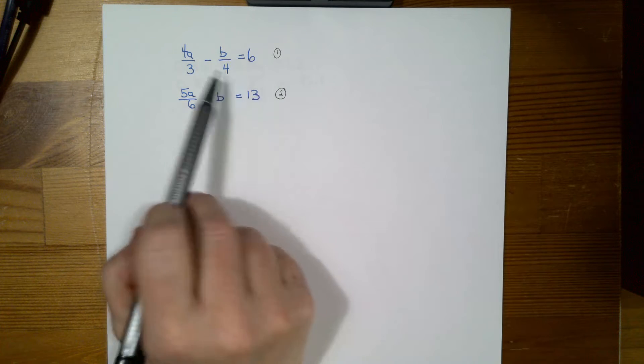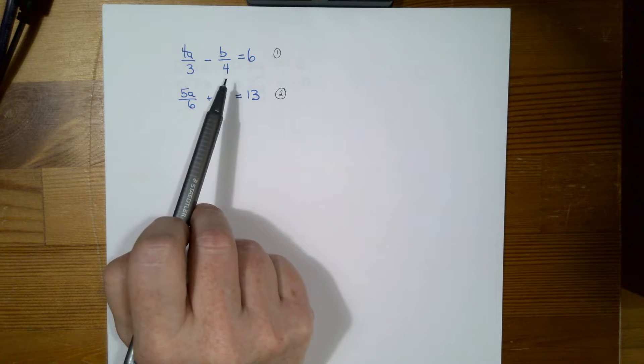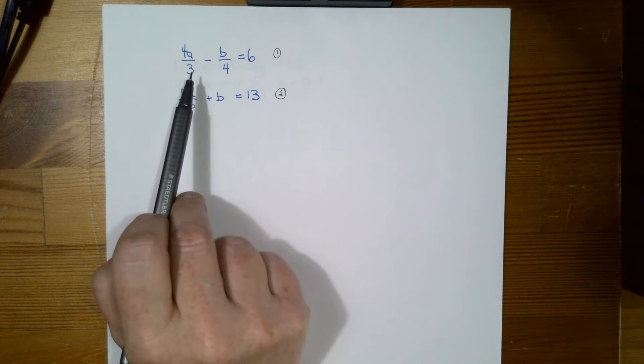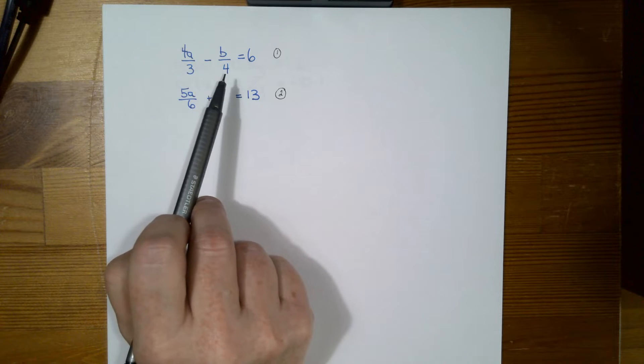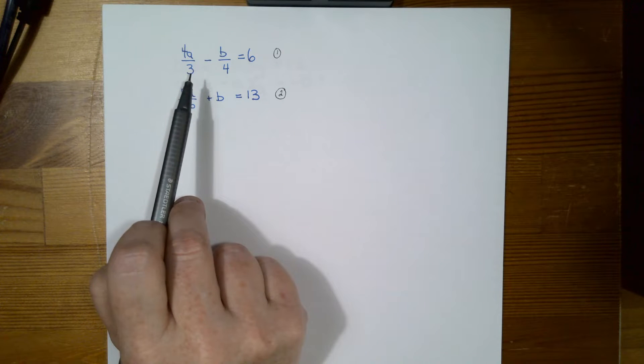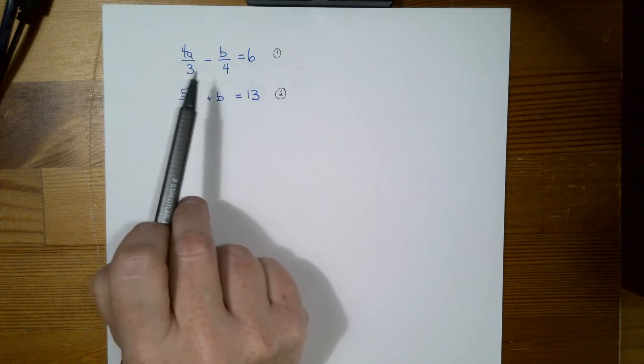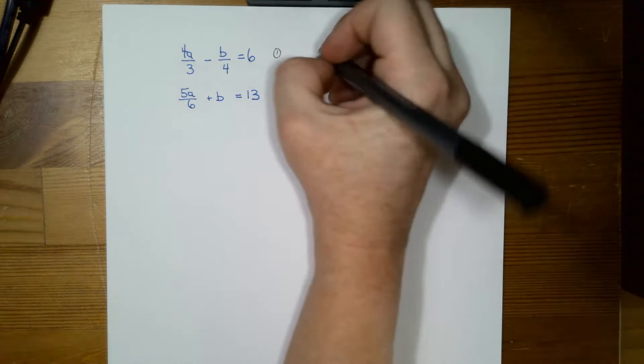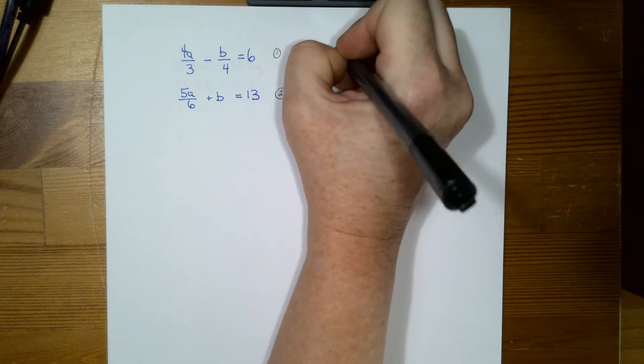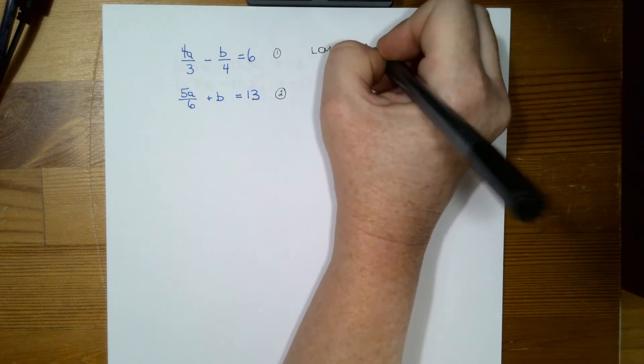So if we take a look at number 1 here, we have a denominator of 3 and a denominator of 4. So what we're looking for is the number, the lowest common multiple of both of those numbers. So 3 has factors of 1 and 3, and 4 has factors of 2 and 2. So in order to find the lowest common multiple here, I'm going to do lowest common multiple, it's actually going to be 3 times 4, which is 12.